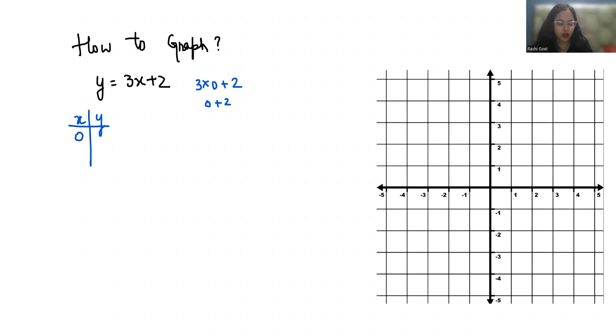Now when x is 1, so 3 times 1 plus 2, 3 plus 2, that is 5. Now when x is minus 1, so 3 times minus 1 plus 2, minus 3 plus 2, that is minus 1.